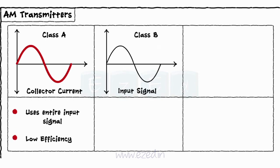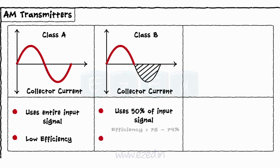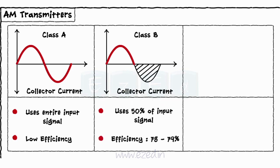In class B amplifier, the collector current flows only for half of the input signal. As this amplifier makes use of only 50% of the input and produces the output, we get around 78 to 79% efficiency.